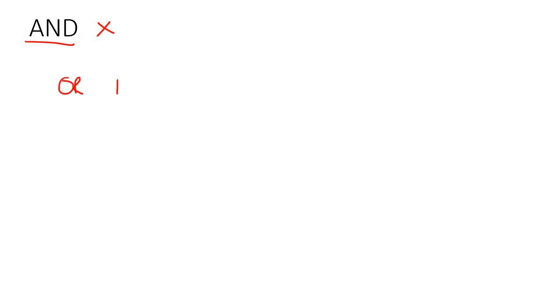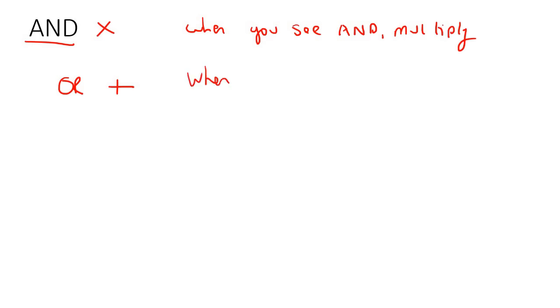Now let's go do some examples. When you see the word 'and', I want you to think about multiplying. When you see the word 'or', I want you to add. Write that down. When it's 'and', multiply. When it is 'or', add.